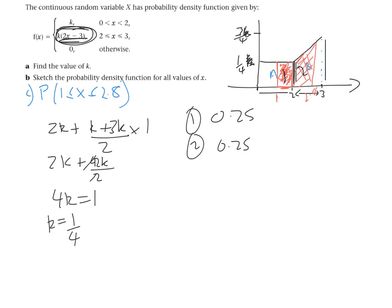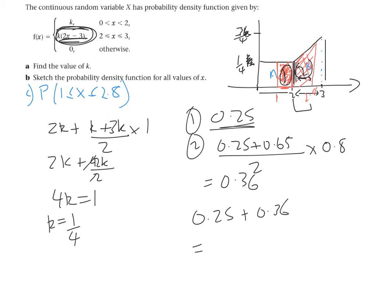And I should get 0.65, divide it by 2, and then multiply by the height between the two parallel sides, just using the area of a trapezium here. And the distance from 2 up to 2.8 is 0.8. So when we work this out, we should get 0.36. So if we add the two areas of rectangle 1 and trapezium 2, so that's 0.25 plus 0.36, we'll get 0.61. And that is the probability that x is between 1 and 2.8.